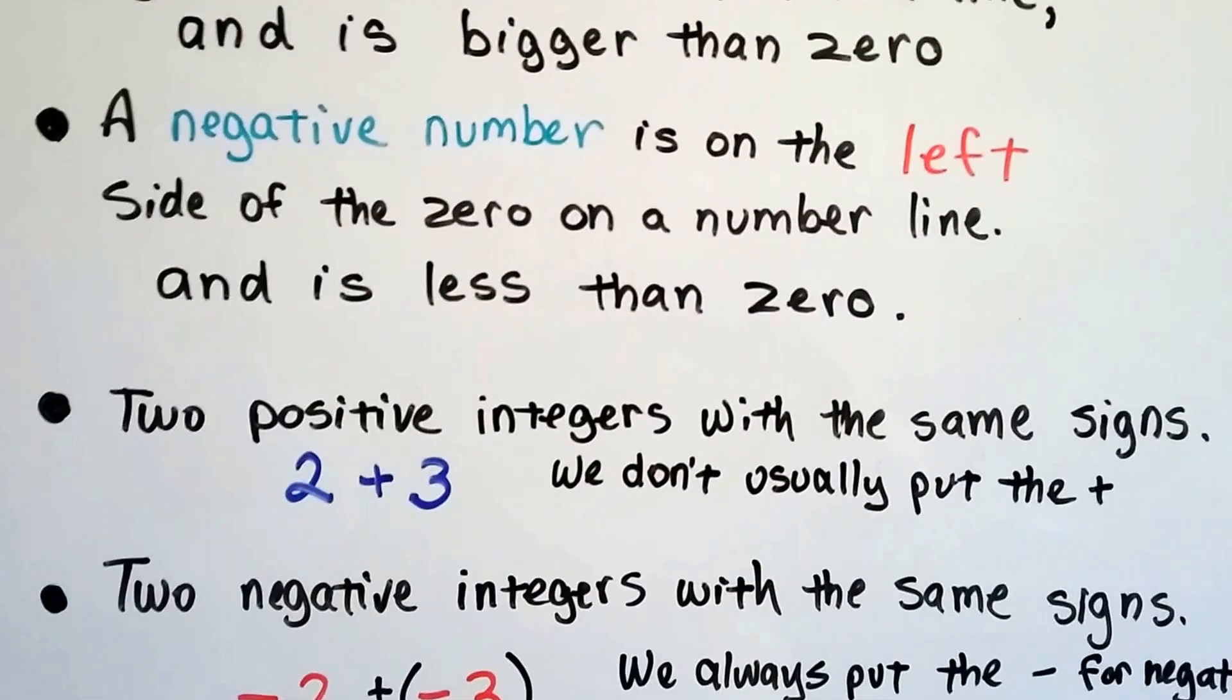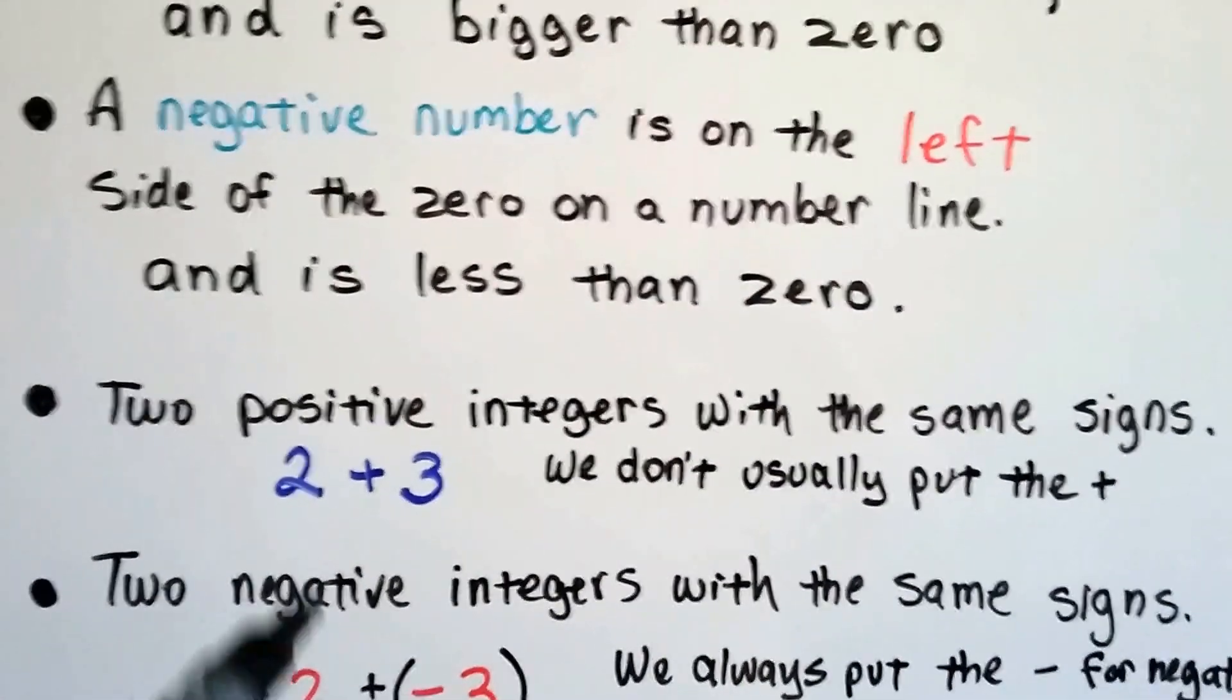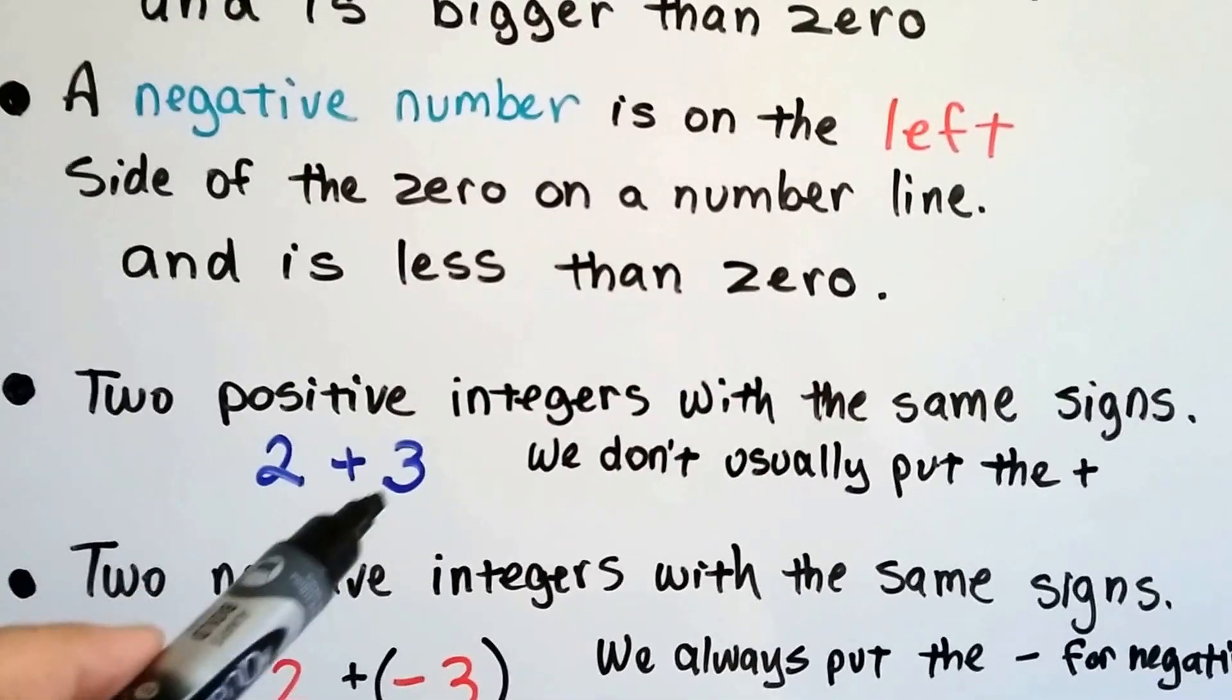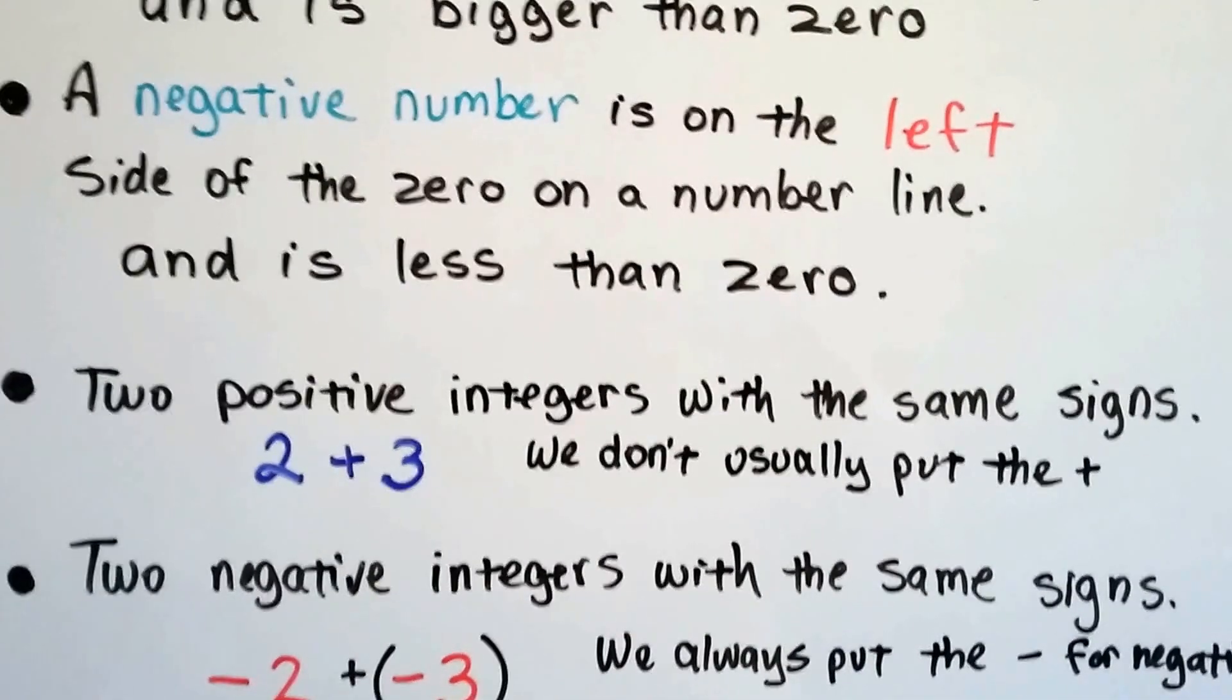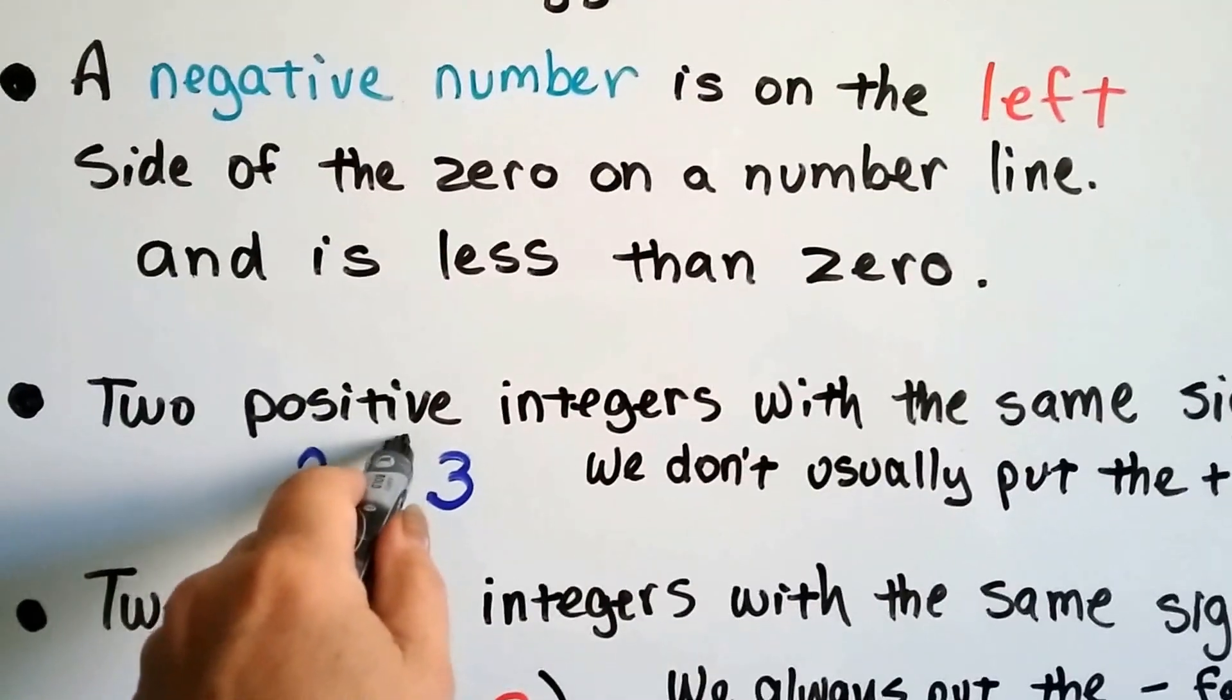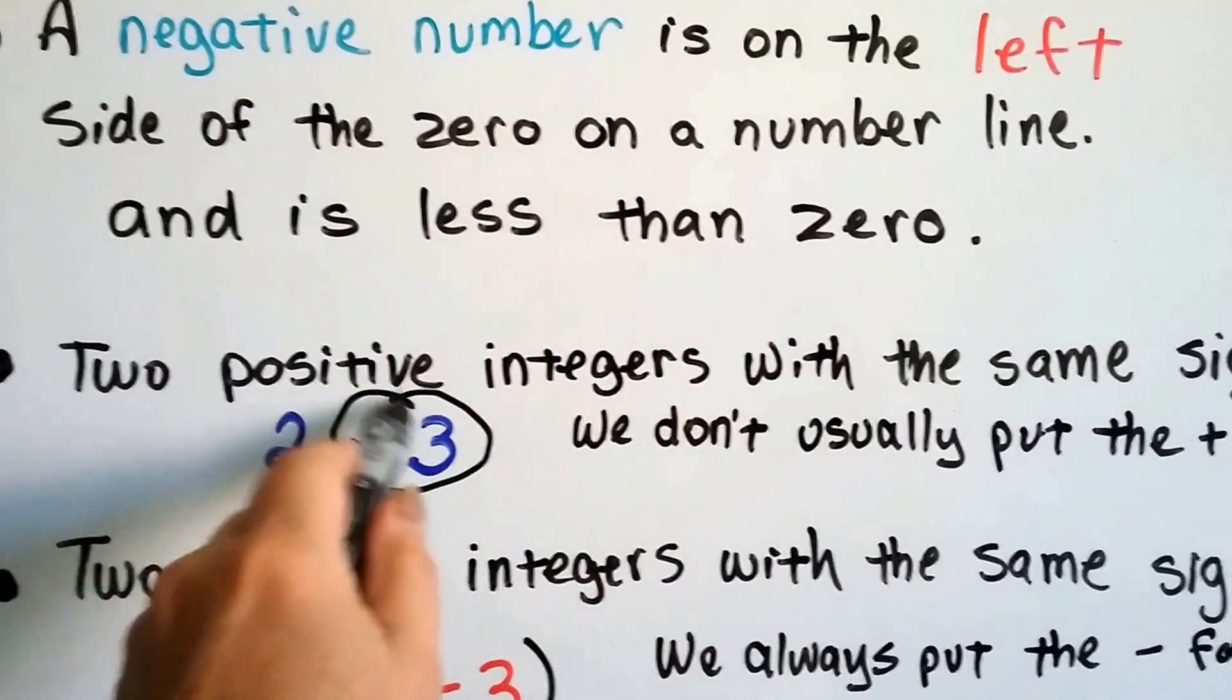Two positive integers with the same signs, this is positive 2 and positive 3, and they're being added together. We don't usually put that plus sign in front of them, even though this one is kind of considered as a plus 3.